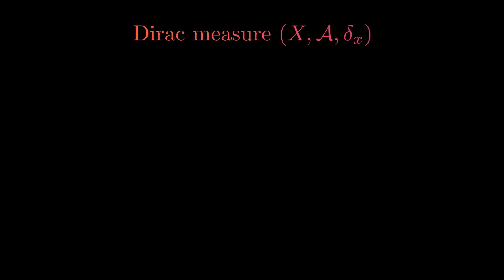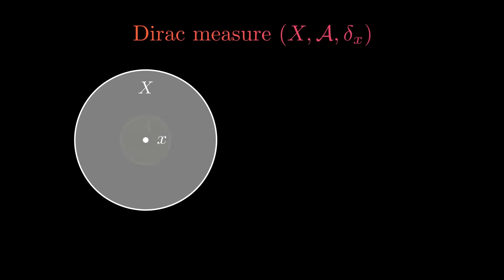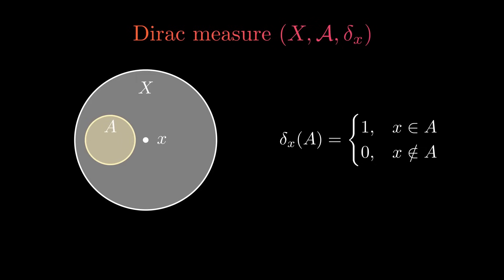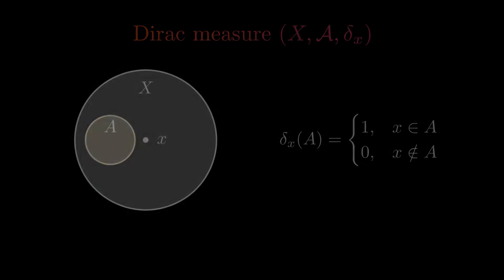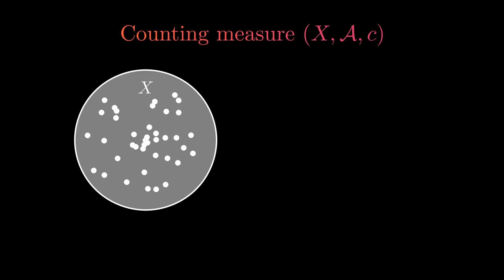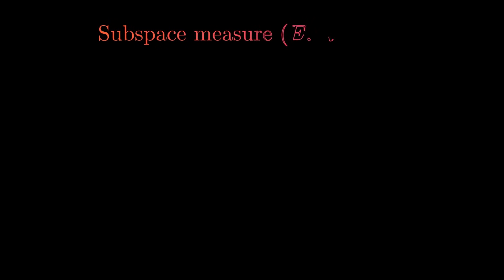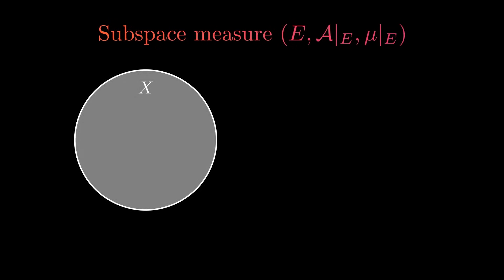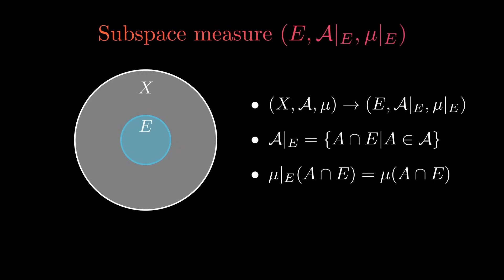Let's look at other examples of measure spaces which show that the measure does not have to represent size in the usual sense. The Dirac measure is focused on one single point x: the Dirac measure of any set which includes this point is one, and every set which does not include x has measure zero. This function satisfies all conditions for a measure. Another measure is the counting measure, which gives the number of points a set includes. When dealing with a measure space, we often want to look at just a certain region — the subspace measure helps here. For any measurable subset, we may define a new measure space which focuses on this subset and assigns the same measure to sets inside it as the measure on the whole space would.